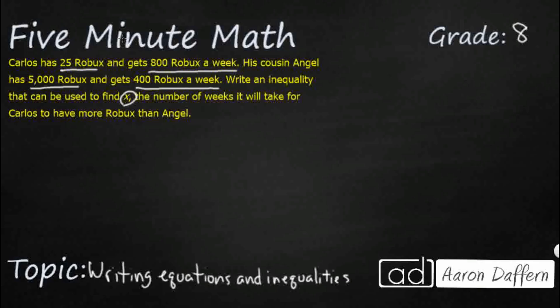Carlos starts with 25, but gets more per week than Angel does. All right, so in order for us to really understand this, we are going to take a look at three different terms. So we need to understand what our variable is. We need to know if we have any constants, and we need to know if we have any coefficients. Once we know those, it's easy for us to write our inequality.